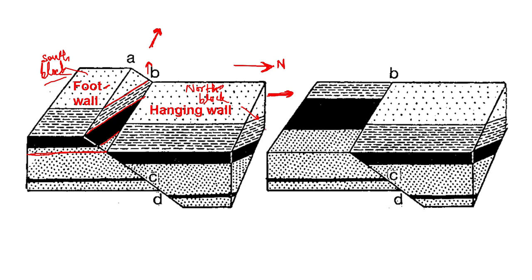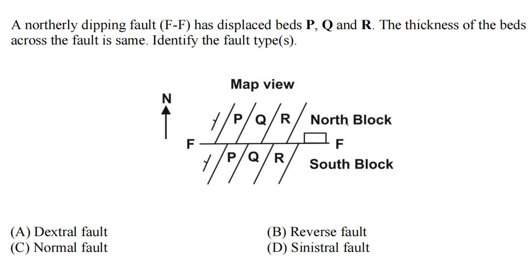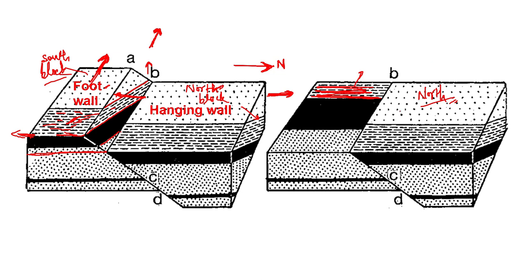This gives rise to a final structure which you can see on the right-hand side — now the strike of this bed, as shown by the dashed lines, would be here at this line. Before, it was here, but now it is here. So you can see that the strike of this bed has shifted towards the west with respect to the north block. If we look at the question, the beds in the north block have shifted towards the left with respect to the south block, but here the beds in the north block have shifted towards the right.